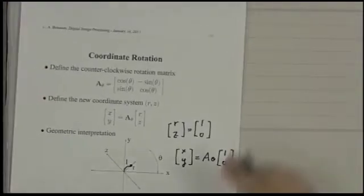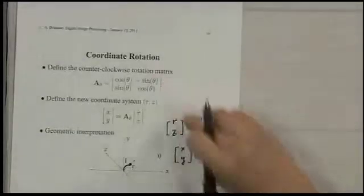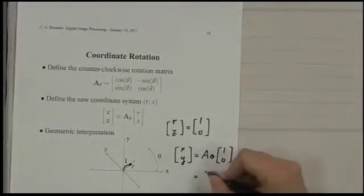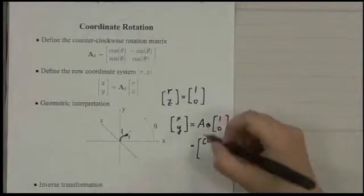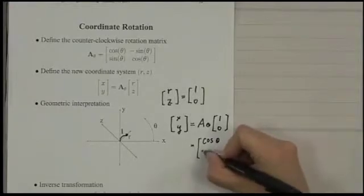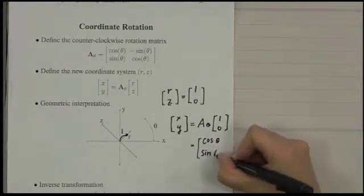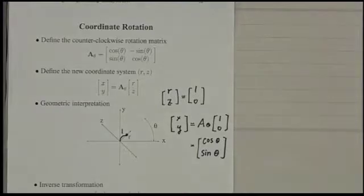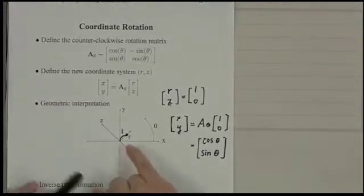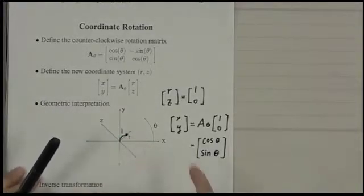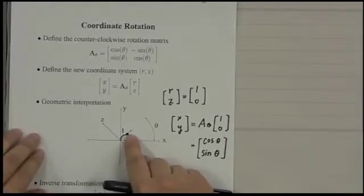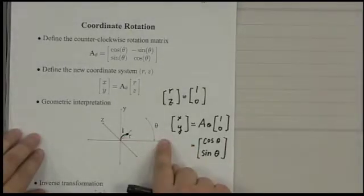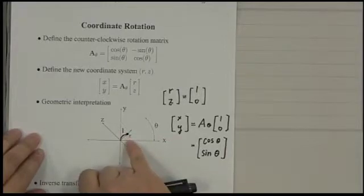We substitute this matrix here, and what we get is cosine θ and sine θ. So what we get is a change of coordinate. This point can now be measured on the x-y coordinate system. This is cosine θ and sine θ.